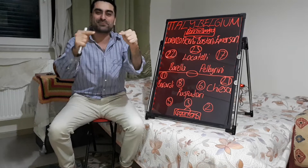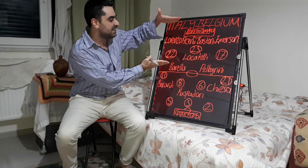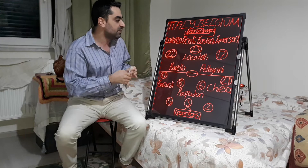Let's start with the tactics of this game. Italy played in a classical 4-3-3 formation and Belgium played in a 3-4-3 formation.